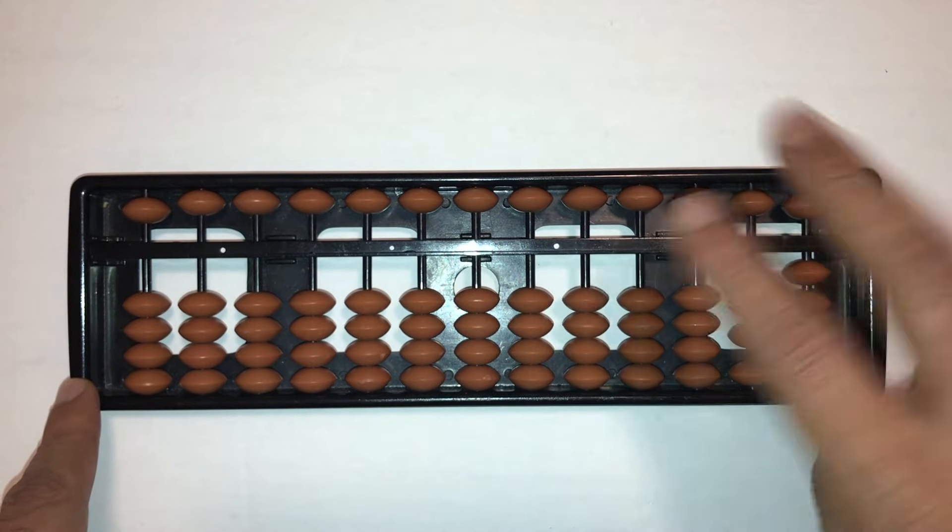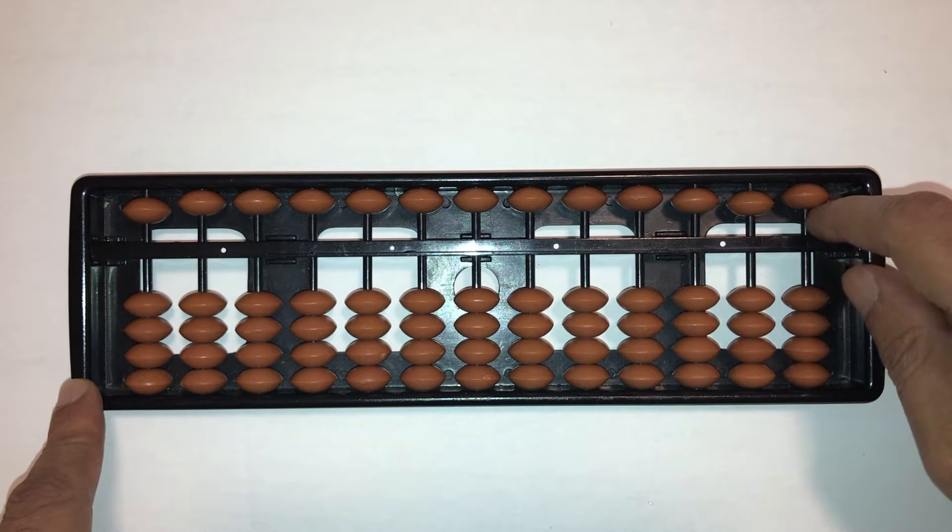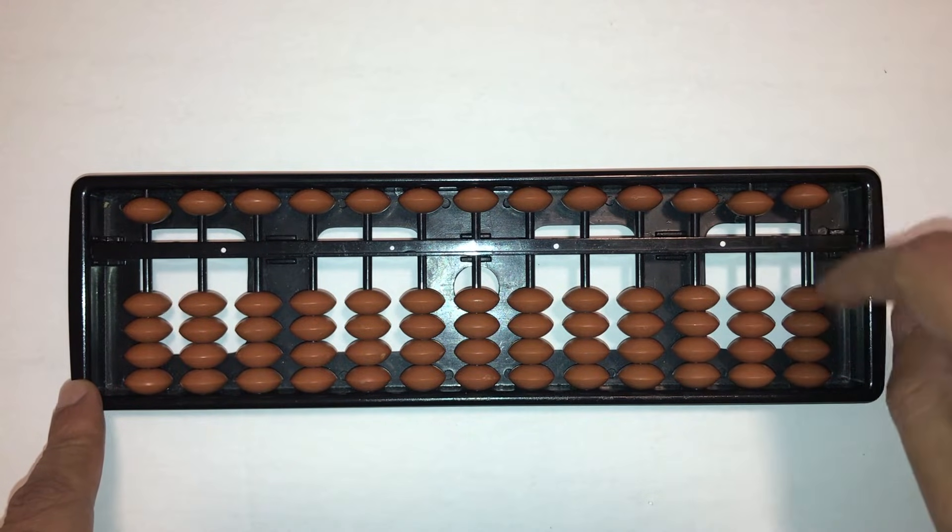There's a Chinese abacus which has two beads above the bar and five beads below the bar in each column. Again, that's not what we want either.